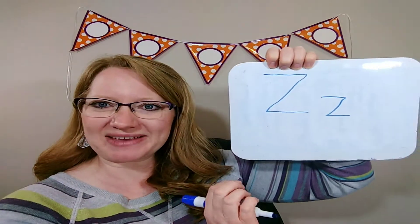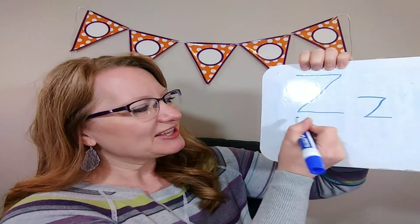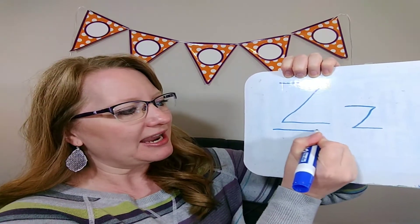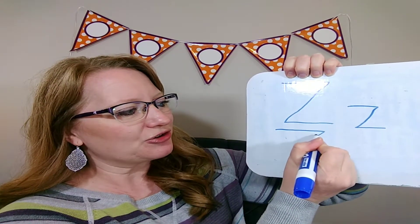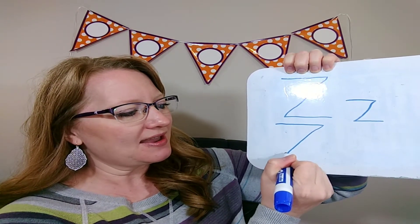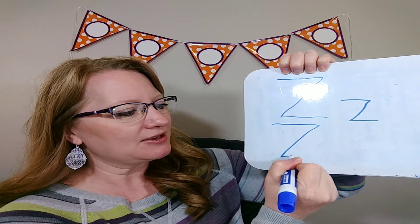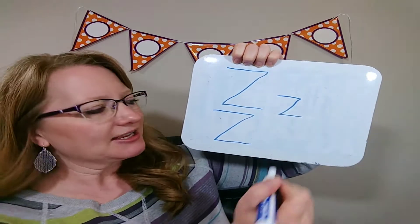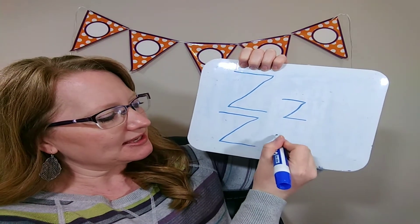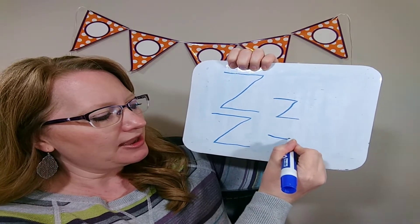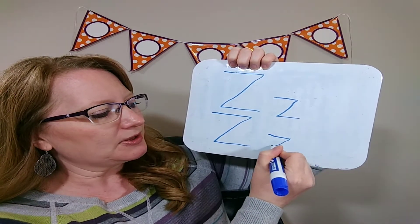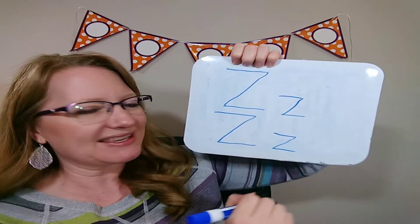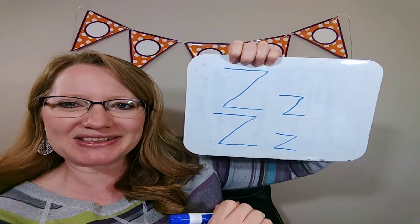Watch one more time as I make it. He keeps his head nice and tall, he has stripes all the way down his body, down to his feet — and that's our capital Z. Small Z: the small zebra keeps his head nice and tall. He has stripes all the way down his body to his feet, and that's our small Z.